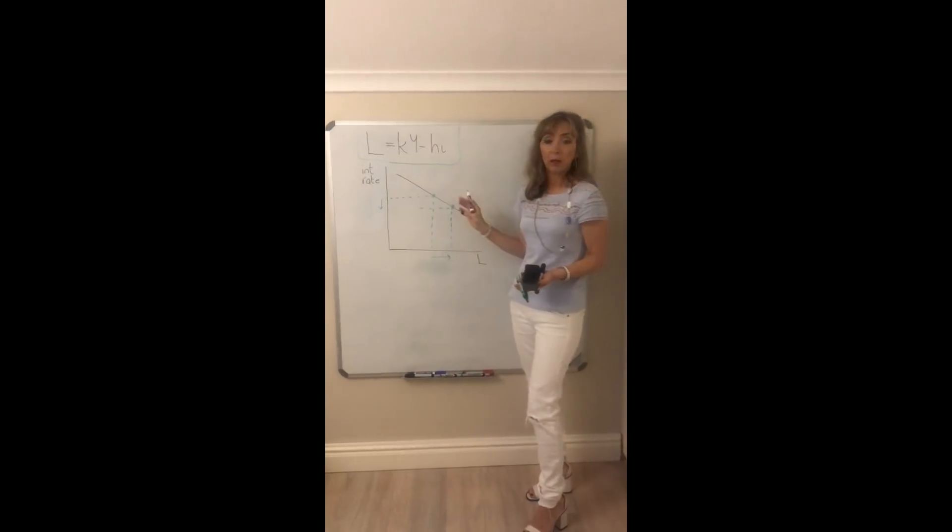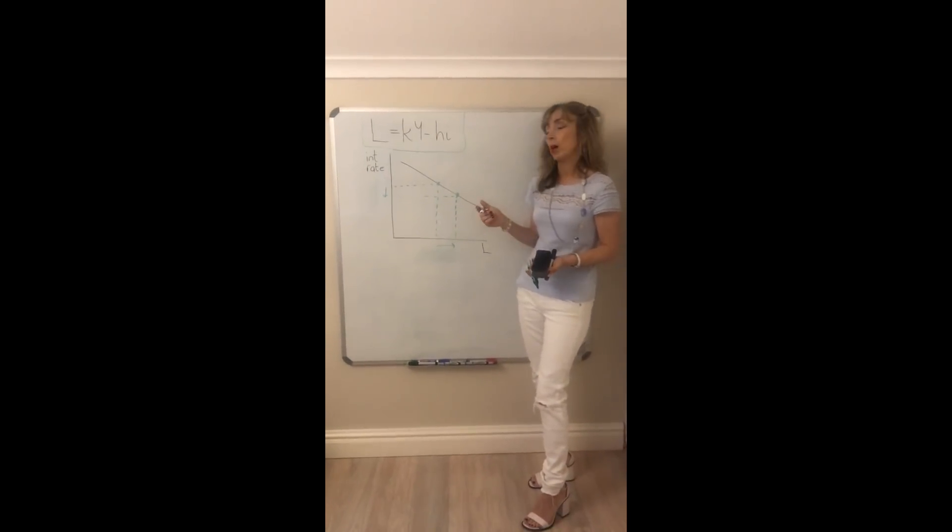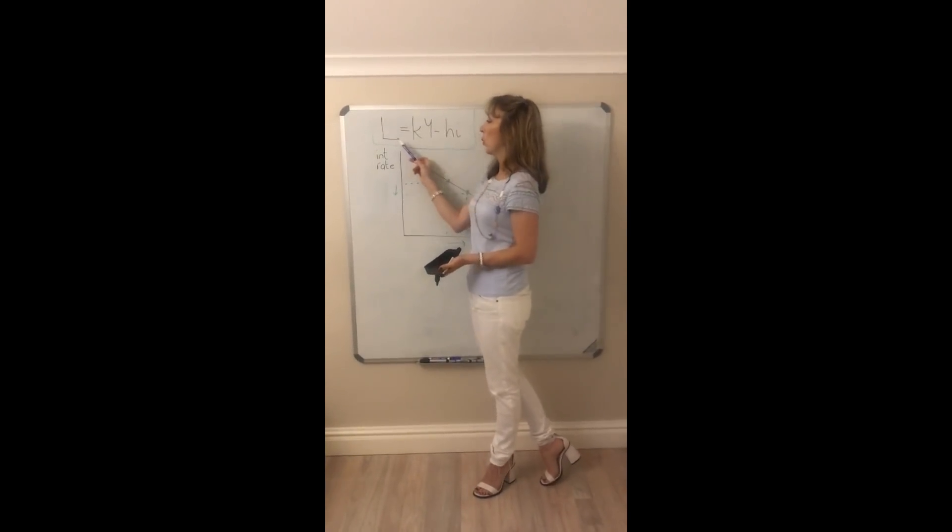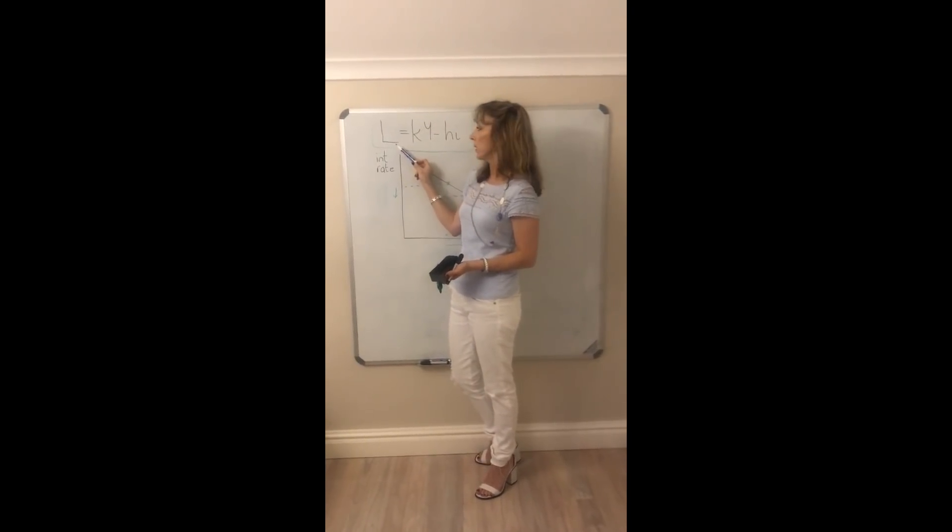We now need to introduce the money market, an equilibrium in the money market. So we're first going to derive the demand for money or liquidity preference L.